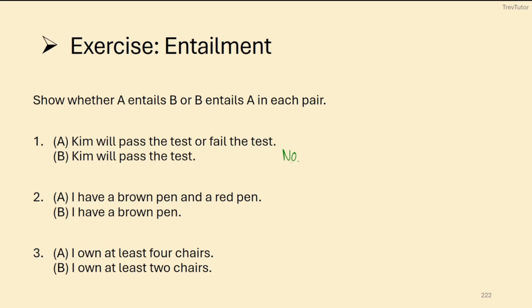What about in two? I have a brown pen and a red pen. Entails that I have a brown pen. Yes, this is entailment. I'm saying I have two of these things, so I can entail specifically that I have one of those things.